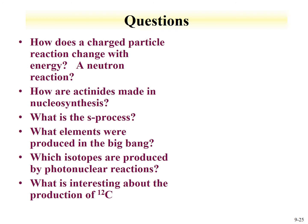Other nucleosynthesis questions: which elements were produced in the Big Bang — primarily the lightest three, mainly hydrogen. What isotopes are produced by photonuclear reactions? This depends on the target, since photons can react with a target nucleus releasing a proton (decreasing Z by one), removing a neutron (decreasing A by one), or removing an alpha particle — so produced isotopes are close to the target, within one or two Z units lower.